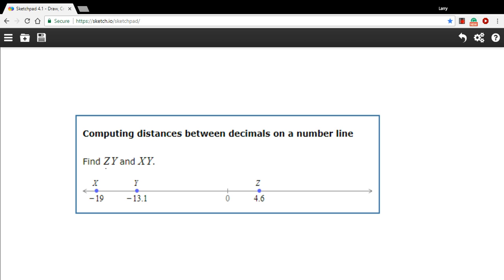The way this problem reads, it says find ZY. ZY refers to the line segment between the endpoints Z and Y, so the length of that. We want to find the length of this, and that's the same thing as the distance apart that these two points are.